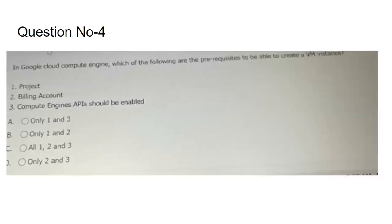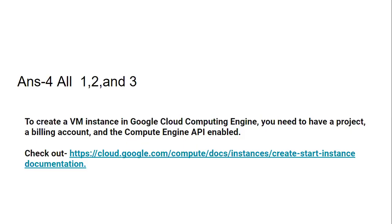Question four is related to Google Cloud Compute Engine: which of the following are prerequisites to create a VM instance? The options are: only project and Compute Engine API enabled, only project and billing account, all of project, billing account, and Compute Engine API enabled, or only billing account and Compute Engine API. If you have done any labs in Compute Engine, this is easy. The answer is all one, two, and three.